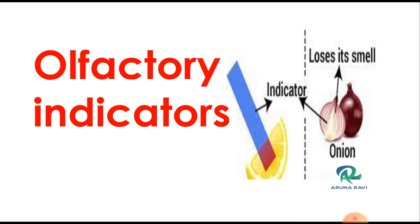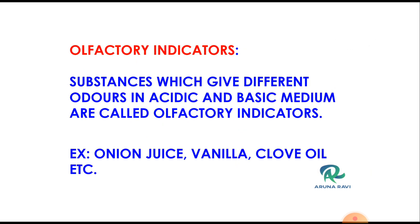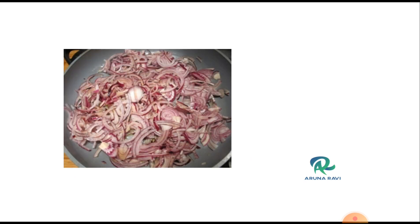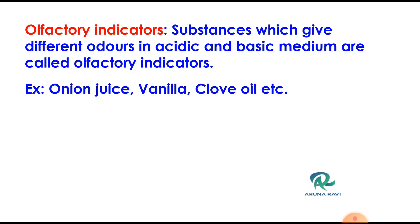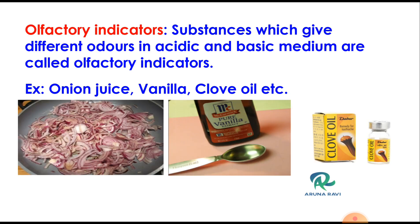Those types of indicators are called olfactory indicators. What are olfactory indicators? Substances which give different odors in acidic and basic medium are called olfactory indicators. For example, onion juice, vanilla, and clove oil are all olfactory indicators.